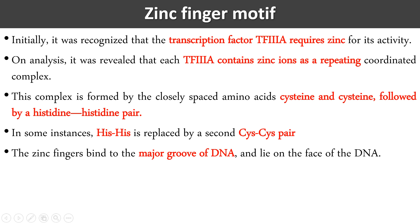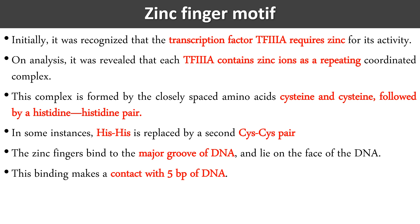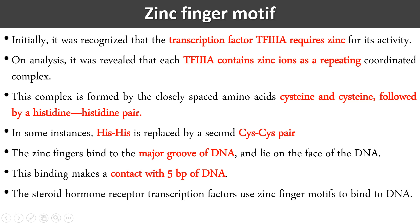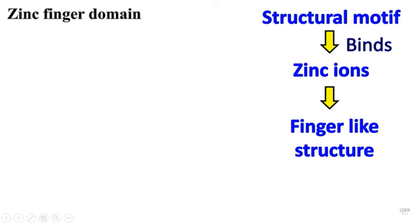The domain binds with the major groove of DNA, lying on the face of the DNA. This binding makes contact with five different bases — meaning the span of DNA where this motif binds is five base pairs. Some specific factors like steroid hormone receptor transcription factors use this zinc finger motif for binding to DNA. These are structural proteins where the motif is associated with the zinc ion through specific amino acids of the protein.